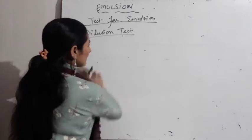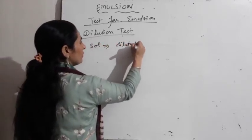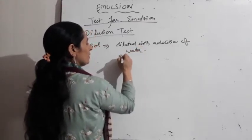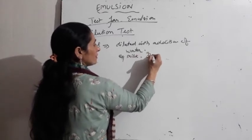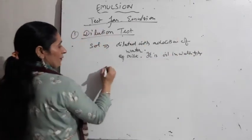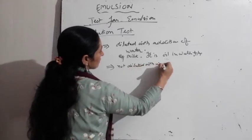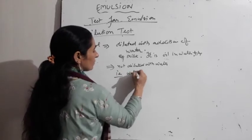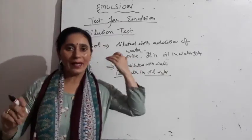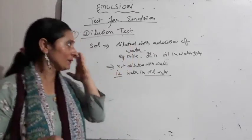Dilution test kaise karenge: agar jo bhi emulsion hai, is diluted with addition of water — for example milk — to it is oil-in-water type. Aur agar ye fat ya ghee se dilute ho jaati hai, if it is not diluted with water, that is water-in-oil type. Dono containers mein paani daaliye — jo dilute ho gaya, that is oil-in-water type, aur jo dilute nahi hua, that is water-in-oil type.